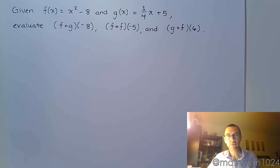Okay, so we have these two functions, f of x equals x squared minus 8, and g of x equals 1 fourth x plus 5. And we have three expressions that we need to evaluate.